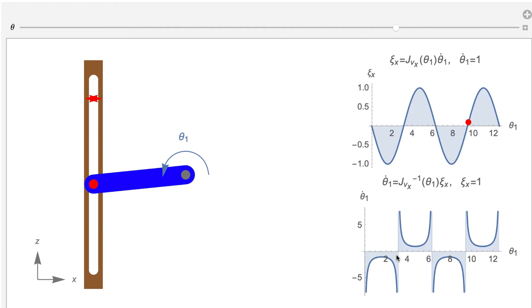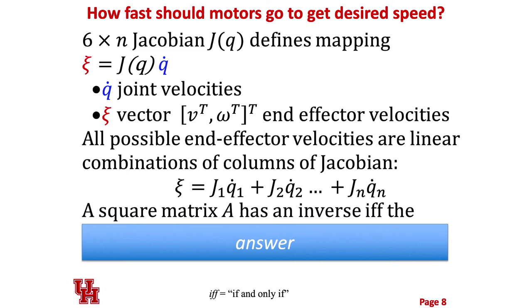The Jacobian tells us how fast our motors must go to achieve our desired end-effector speed. We have a 6×n Jacobian for a robot with n joints. For each configuration q, J(q) is a 6×n matrix that maps joint velocities to end-effector velocities. The velocity vector ψ — containing linear and angular velocities — consists of all possible linear combinations of the columns of J. We're really asking: does this matrix J have an inverse? That brings us back to some linear algebra.